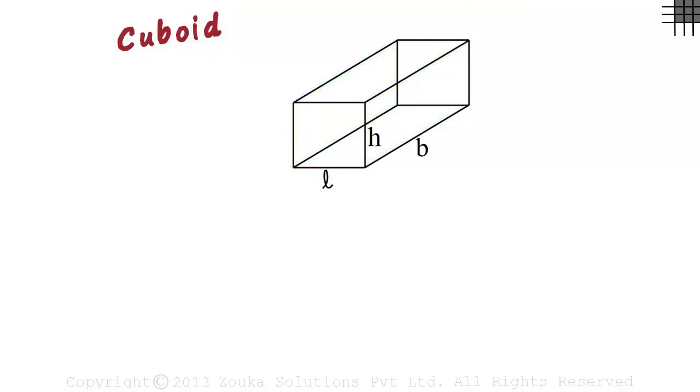The most important thing we should know about a cuboid is that it is defined by its length, breadth, and height. We call them L, B, and H respectively.